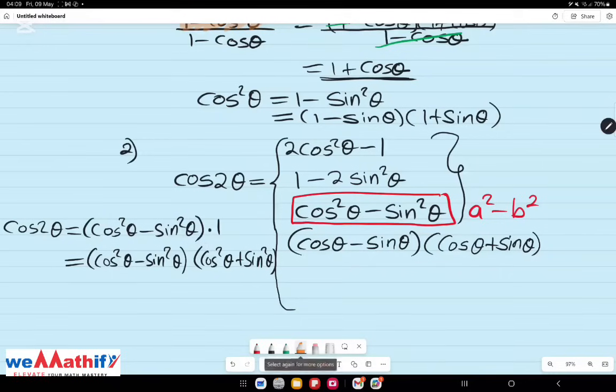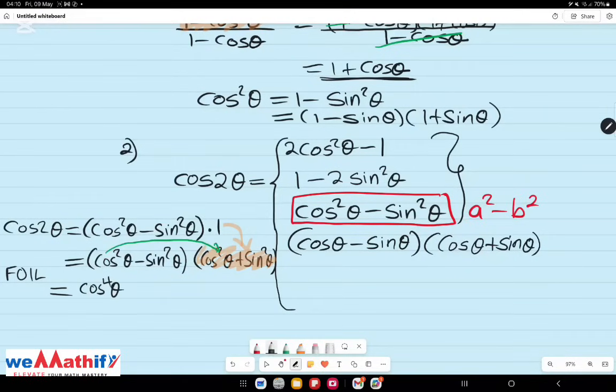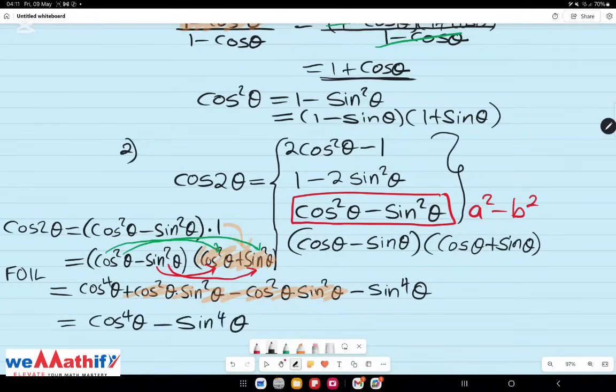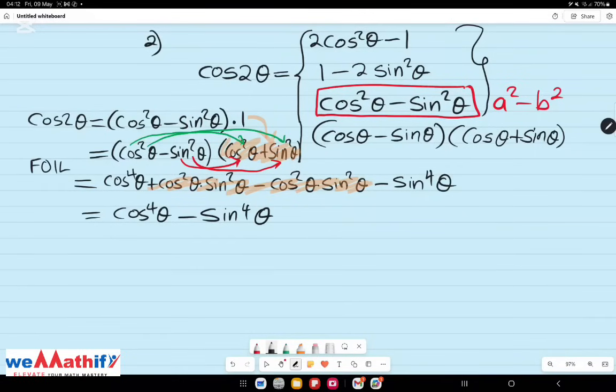According to the squared identity, this is equal to 1. So we are just manipulating that expression. In the next step, we are going to FOIL this. This is just an acronym for saying EXPAND. Cancelling out the like terms since they have opposite signs gives us, what this simply means is cos 2 theta is equal to cos to the power 4 theta minus sine to the power 4 theta.